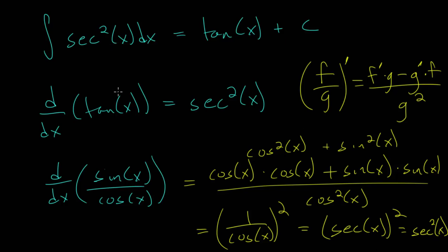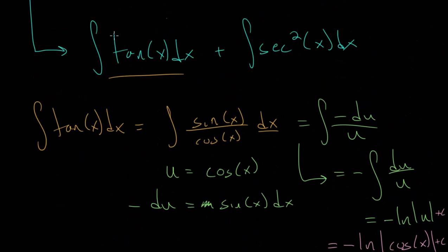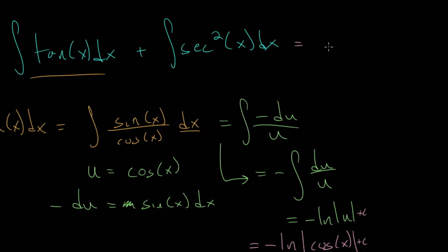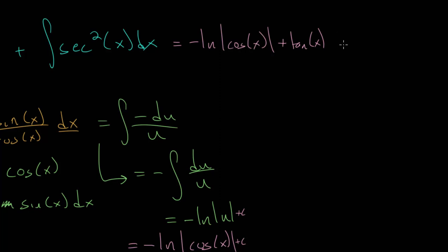So we've proven that the function whose derivative is the secant squared of x is the tangent function. We've figured out both integrals individually, so we can now add them together. This integral is equal to minus the natural log of the absolute value of the cosine of x, from the integral of the tangent of x dx, plus the tangent function from the integral of the secant squared of x, plus a constant of integration C. This constant is important when dealing with indefinite integrals where we don't have bounds, because taking the derivative of a constant gives zero.